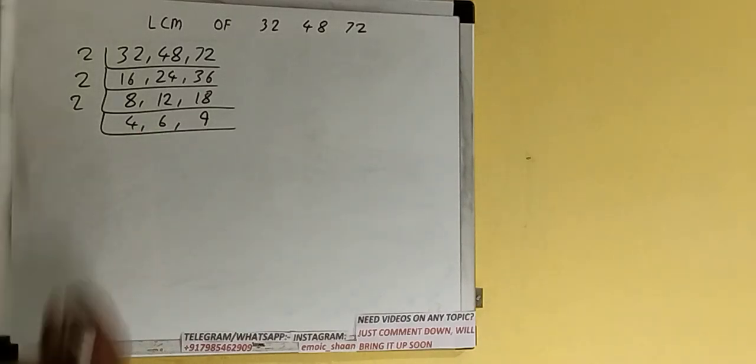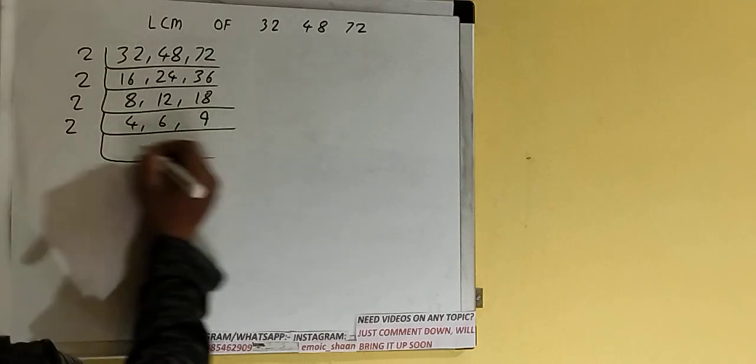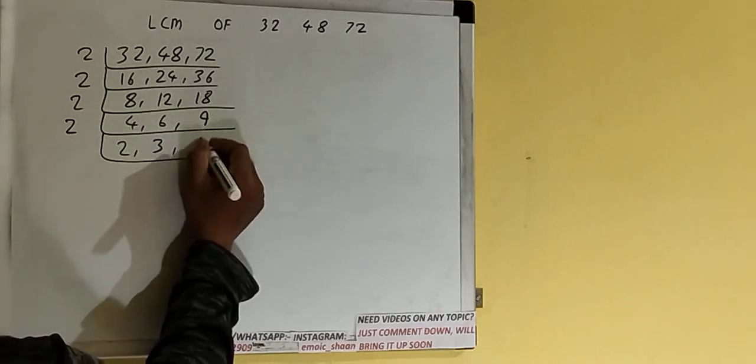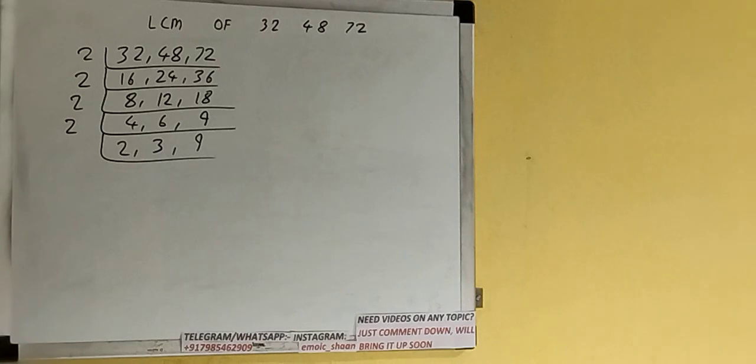Divide only the first and second numbers by 2. First will become 2, second will become 3, and the third number 9 is not divisible, so we just copy it down. Now, only the first number is divisible by 2.